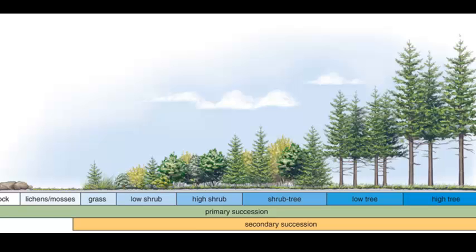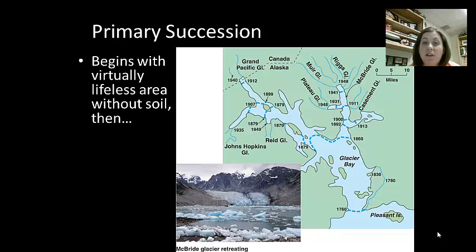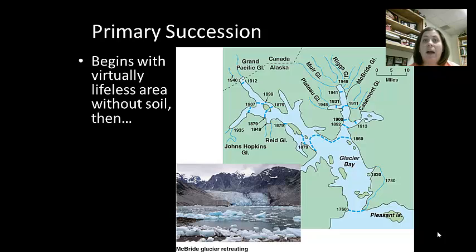There are two types of succession we're going to be discussing. Primary succession occurs when a community develops from no soil base. This occurs when a new island develops, maybe from underwater volcanoes like you see with the Hawaiian islands, or maybe a glacier receding, leaving behind bare rock. This type of succession begins with lichens. They begin to grow on a rock, and these lichens are composed of a fungus and also a cyanobacteria or algae. This is a mutualistic relationship which allows them to survive on this bare rock. The fungus collects minerals and water, and the algae or cyanobacteria does photosynthesis so that they have food.